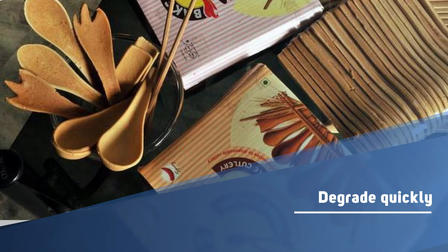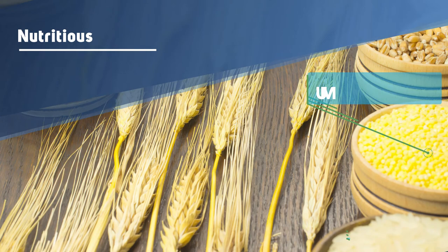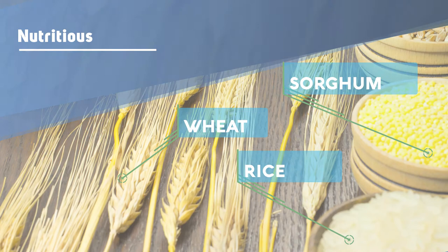His goal was to replace the current disposable utensils with edible and biodegradable ones. If not consumed, these will degrade quickly in the outside environment. They don't need any special environmental conditions for degrading. They are made up of three flours: sorghum, rice and wheat. So they are not just edible but nutritious too.